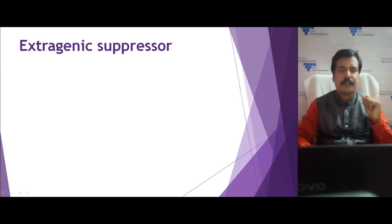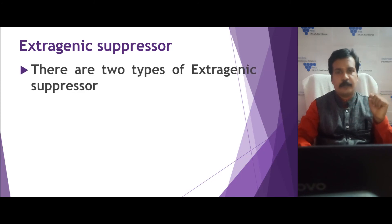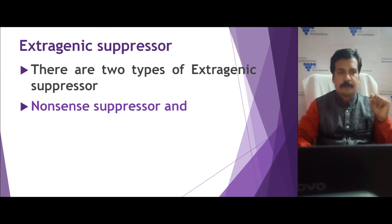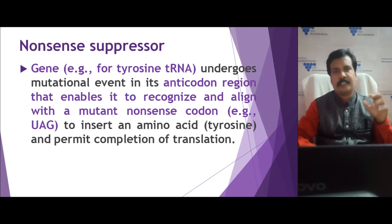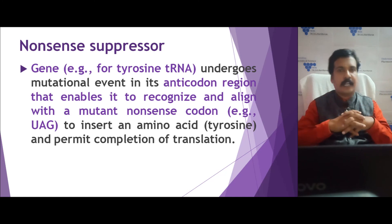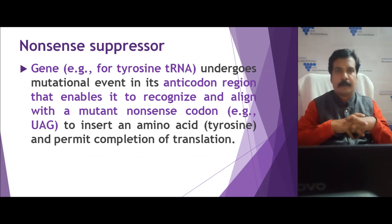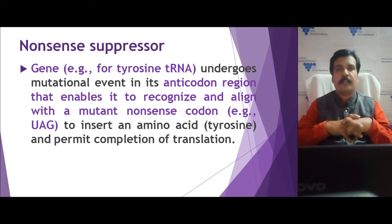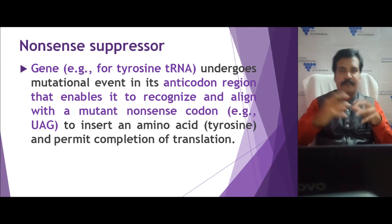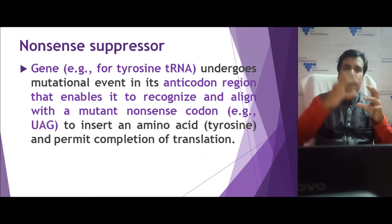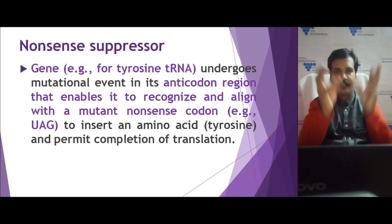Suppressor mutation has two types: intragenic suppressor and extragenic suppressor. The extragenic suppressor can be further classified into two types: nonsense suppressor and physiological suppressor. In the nonsense suppressor, the second mutation at a different location does not change the amino acid sequence. Consider a gene which codes a tyrosine tRNA — an aminoacyl group, tyrosine, gets attached to the tRNA.